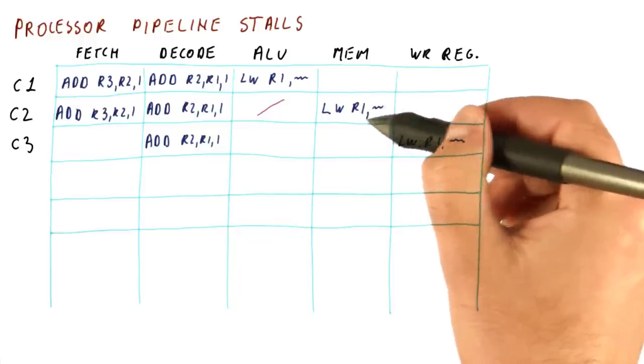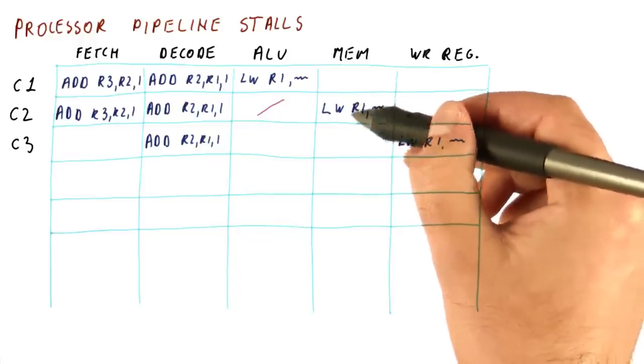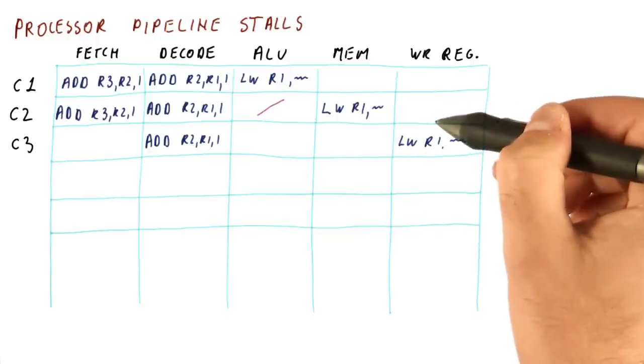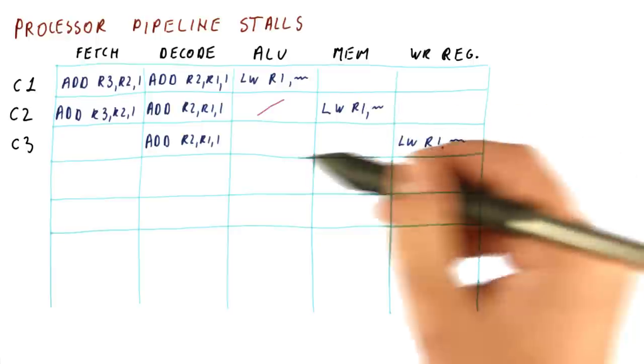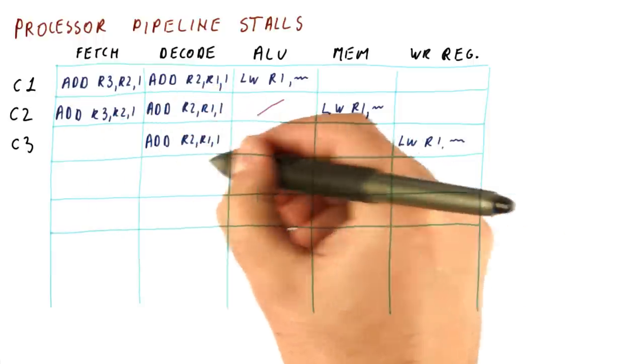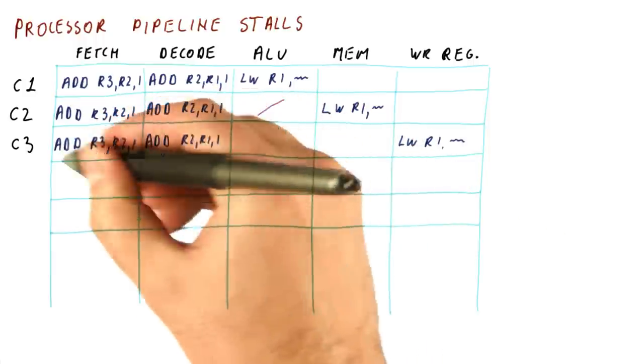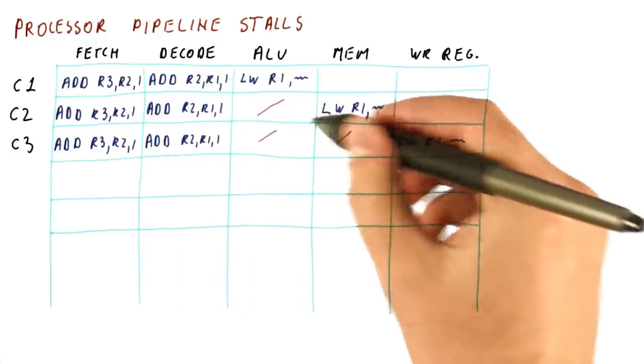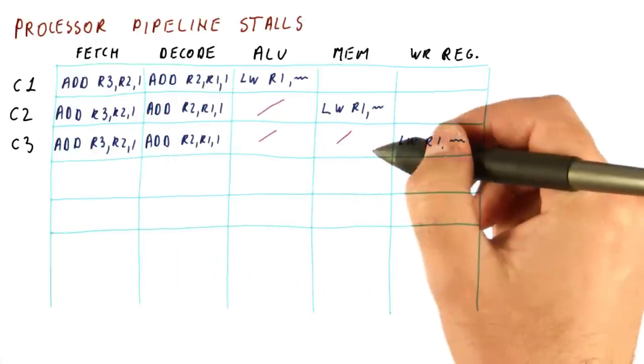So now the load is writing, the add repeats the read. And because the add is still here, the next instruction is still stuck here. And that means that we have two cycles worth of stall.